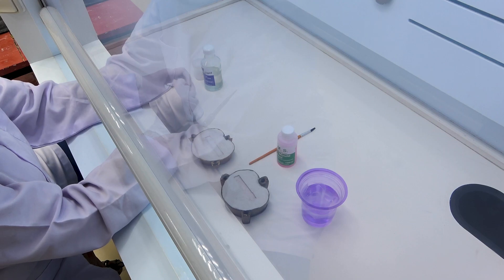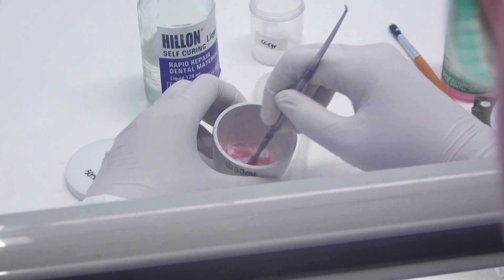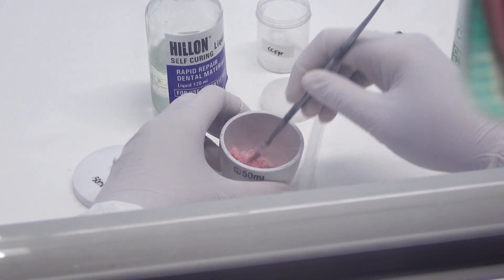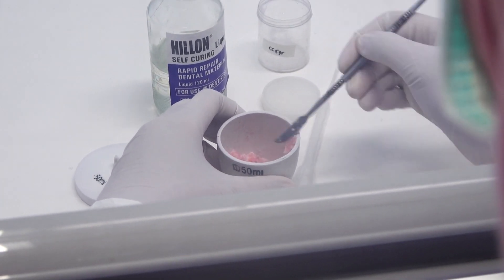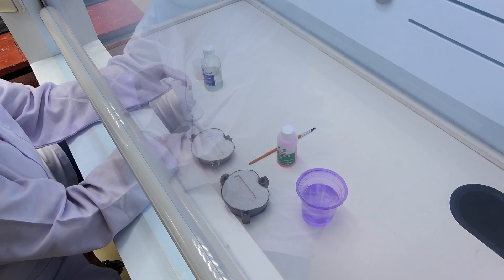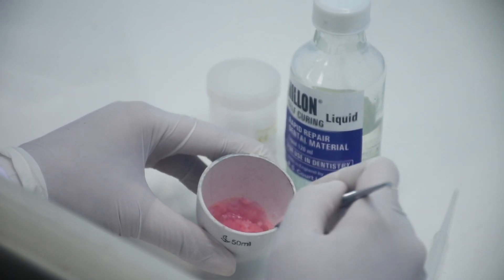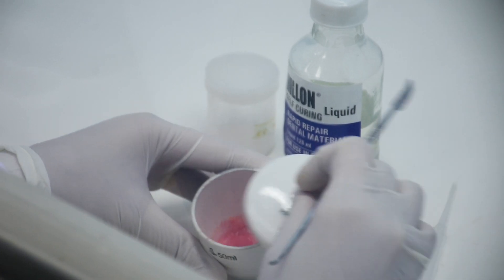Stir the mixture slowly with circular motions using crown mesh for 10 seconds to ensure all polymer is wetted by monomer and homogeneous. Next, close the dappen dish.